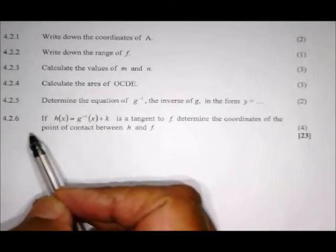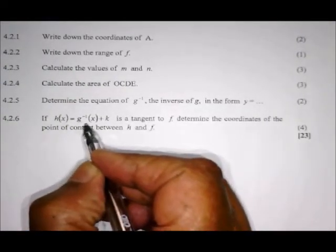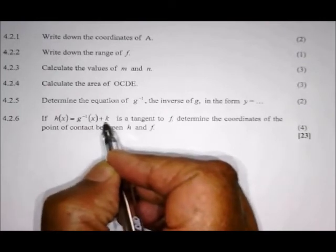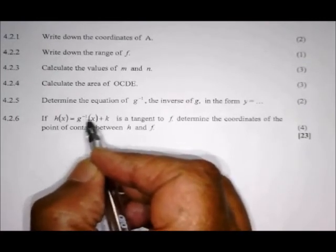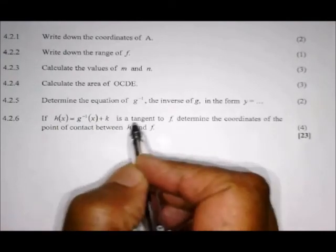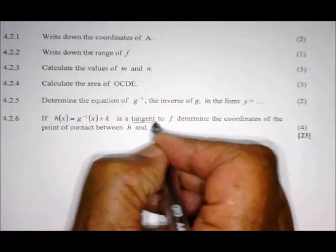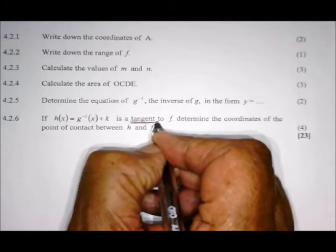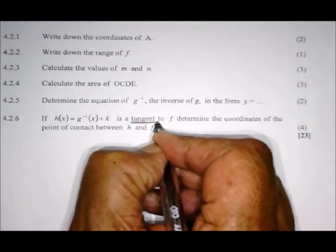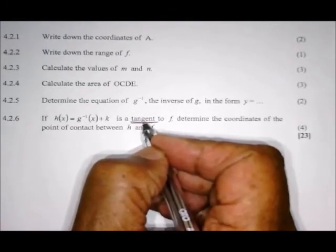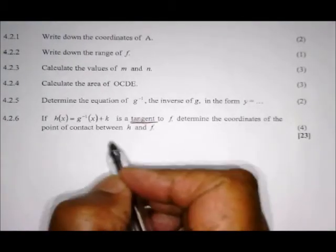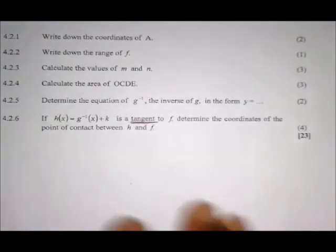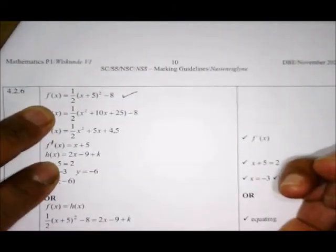4.2.6: If h(x) equals the inverse of g plus k, and h is a tangent to f, determine the coordinates of the point of contact between h and f. The keyword here is tangent. The minute you see tangent, think of calculus, where the derivative equals the gradient of the tangent.